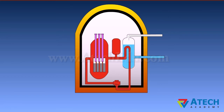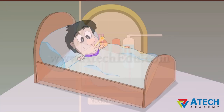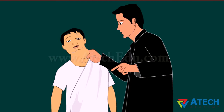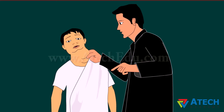Certain isotopes have special properties which make them useful in various fields. Radioactive isotopes are used as fuel in nuclear reactors for generating electricity — for example, an isotope of uranium. An isotope of cobalt is used in the treatment of cancer, and an isotope of iodine is used in the treatment of goiter. Radioactive isotopes are also used to detect leakage in underground oil and gas pipelines.